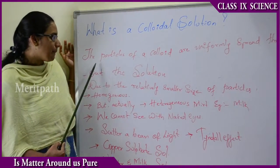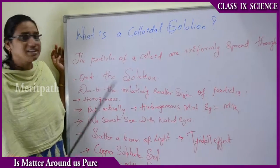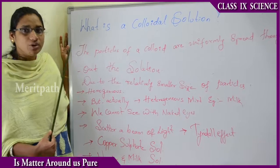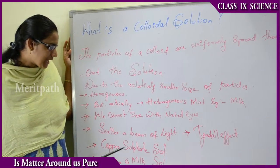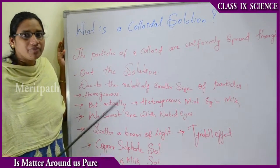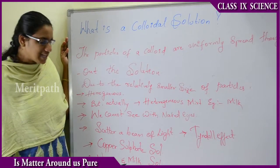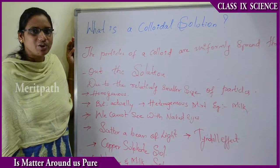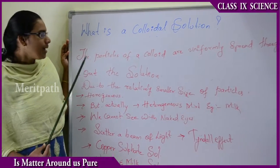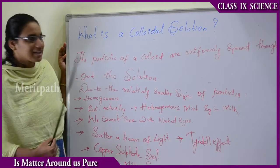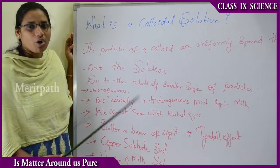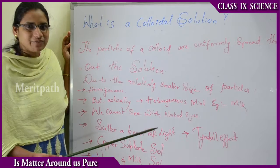What is a colloidal solution? The particles of a colloid are uniformly spread throughout the solution — any matter or substance consists of particles that are uniformly spread over the solvent. For example, take water and milk: water is the solvent and milk is the solute, and milk is spread uniformly over water. We cannot separate water and milk once mixed — that is a colloidal solution. Although it may seem homogeneous, a colloidal solution is not homogeneous because it consists of two different substances with different chemical properties.